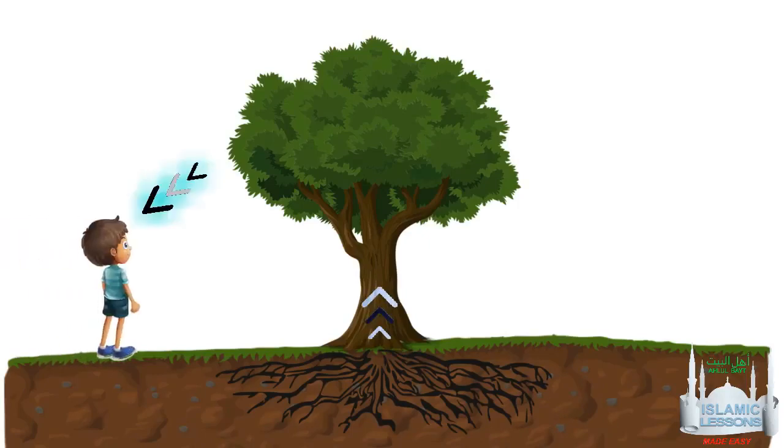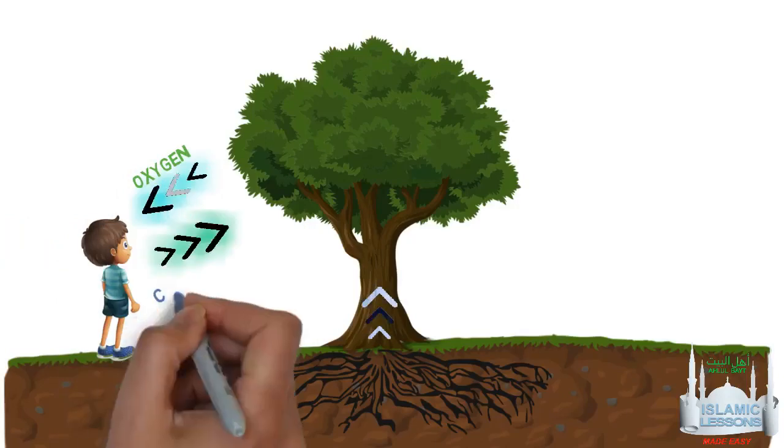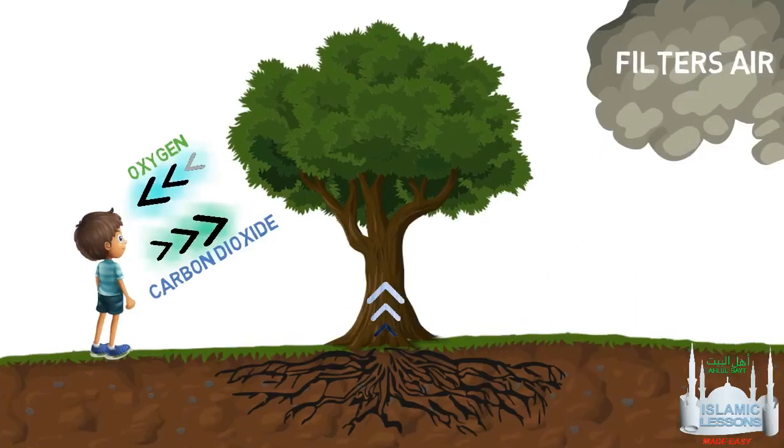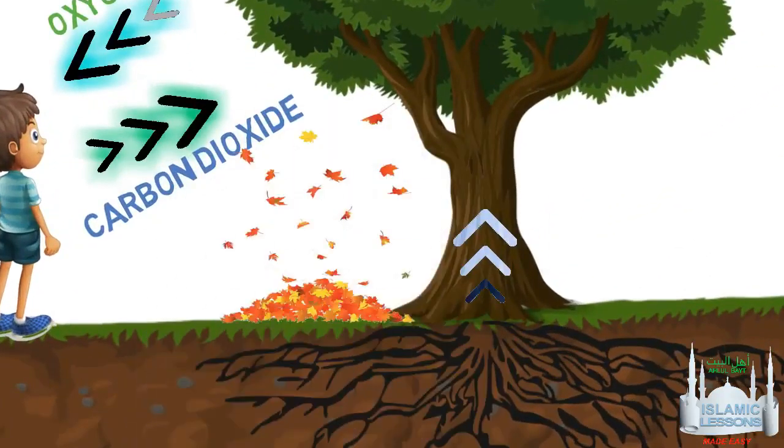The tree then provides humans with oxygen to breathe, and we provide the trees with carbon dioxide to breathe. The leaves of the tree filter the air by removing dust and absorbing other pollutants like carbon monoxide. Fallen leaves make excellent compost that enriches soil.